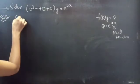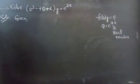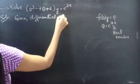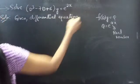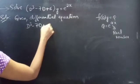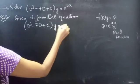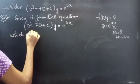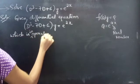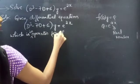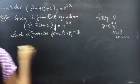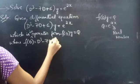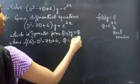Solution: Given the differential equation (D³ - 7D + 6)y = e^(2x) in operator form, we write F(D)·y = Q, where F(D) = D³ - 7D + 6 and Q = e^(2x).